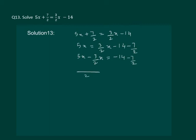We get LCM 2, 10x minus 3x in the numerator. Similarly on the right hand side, LCM 2 gives minus 28 minus 7 in the numerator. So we have 7x by 2 equal to minus 35 by 2.